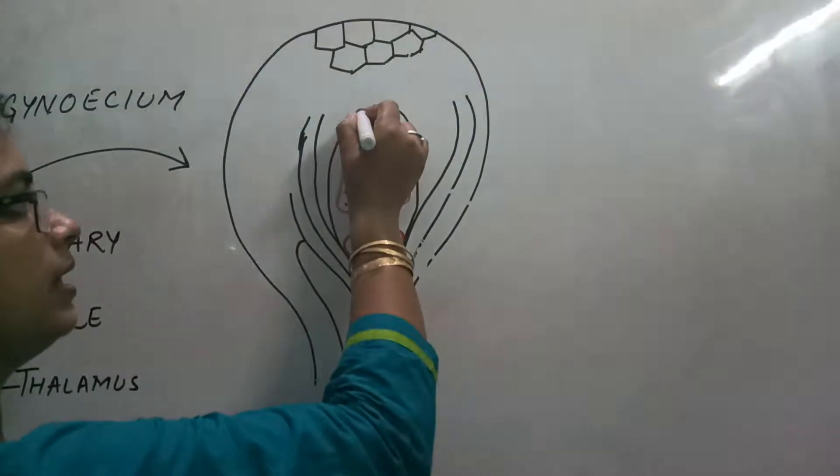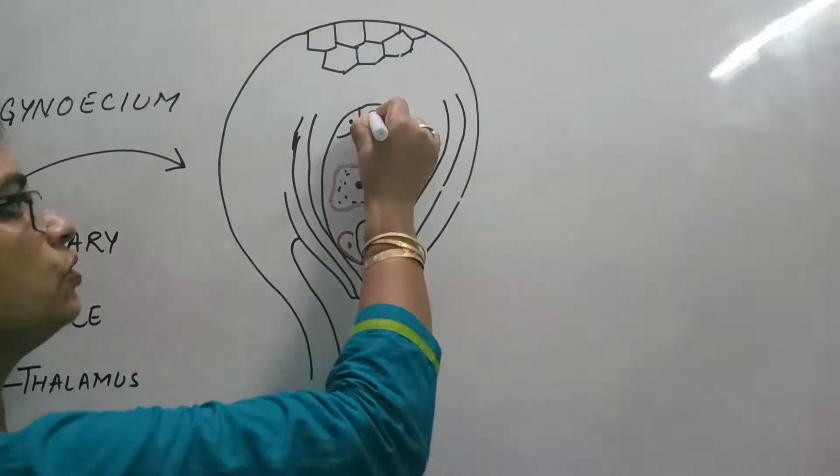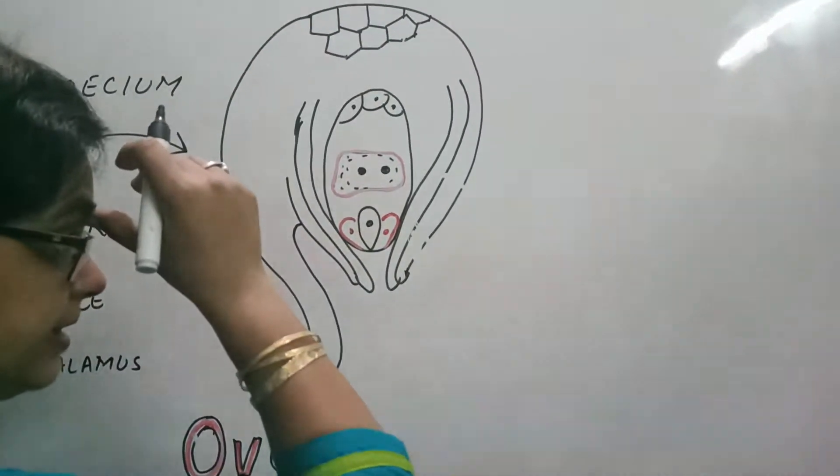Opposite to the micropyle, 3 cells are present: 1, 2, and 3. These 3 cells are to be termed as antipodal.